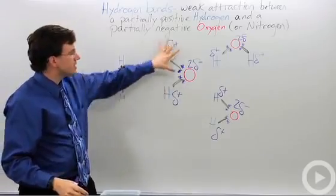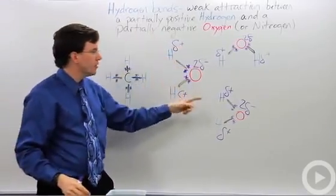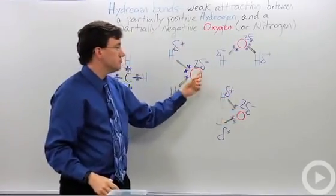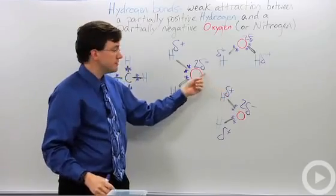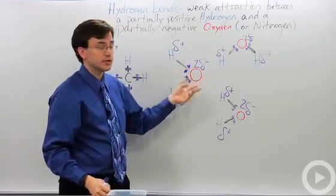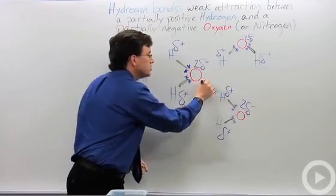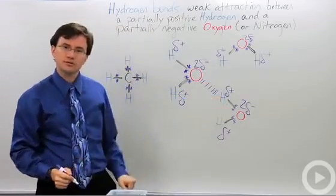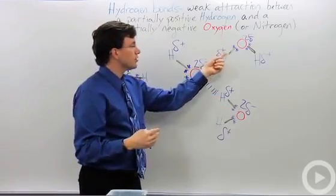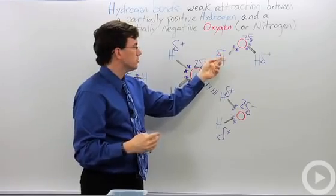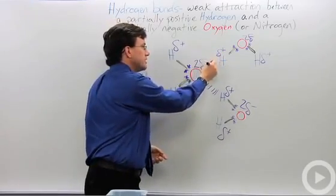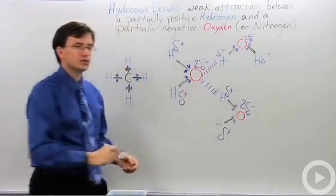So what happens is that as this water molecule is floating around, this water molecule over here, this slightly positive, slightly negative, I'm slightly attracted, you form this weak attraction between these two molecules. Similarly, this water molecule over here, its hydrogen is going, hey, you're sort of attractive. And so we have our weak hydrogen bond there.